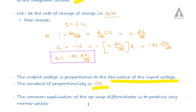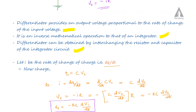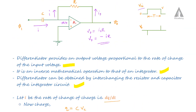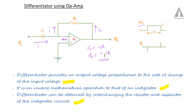A common application of the op-amp differentiator is to produce very narrow spikes. The output voltage of the differentiator is the differentiation of the input voltage.